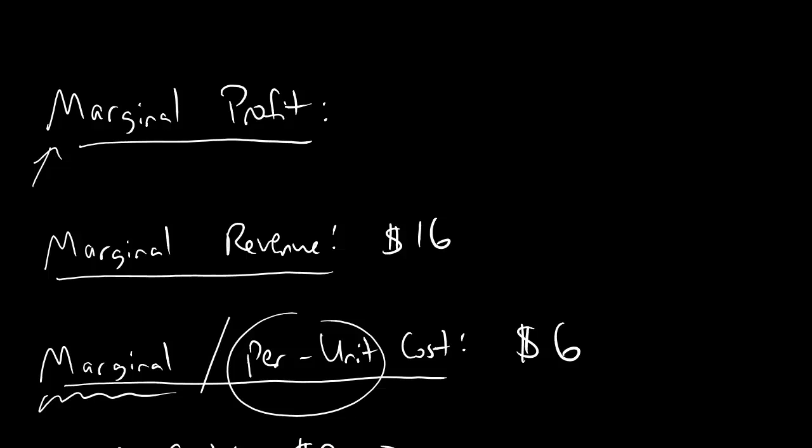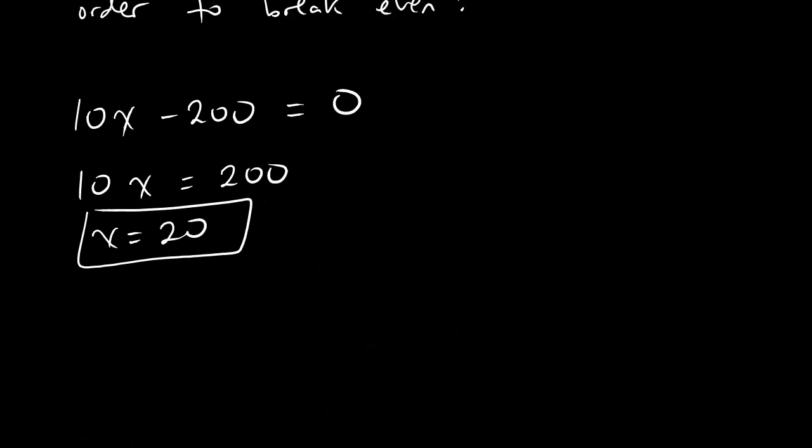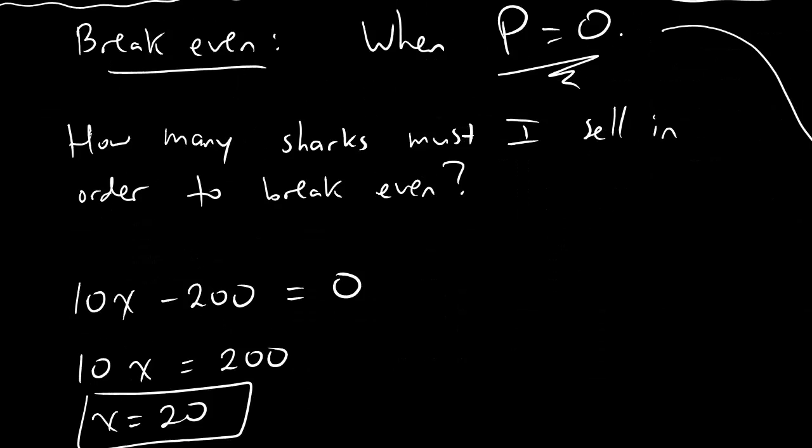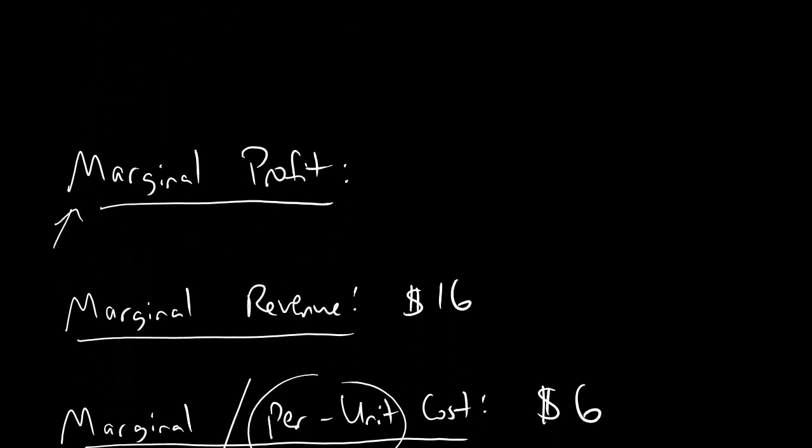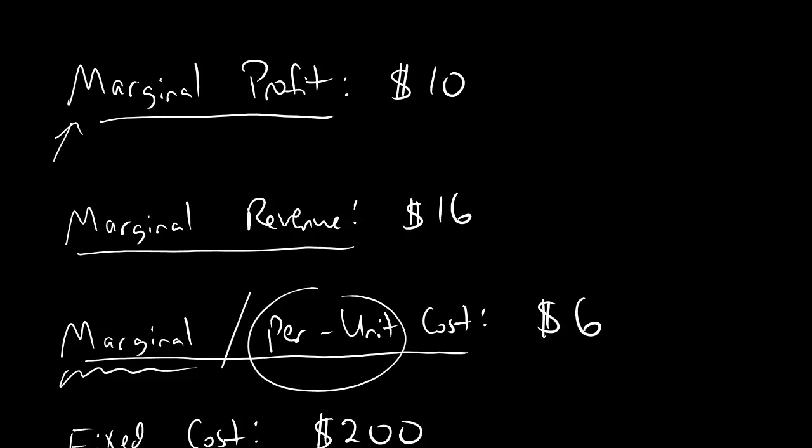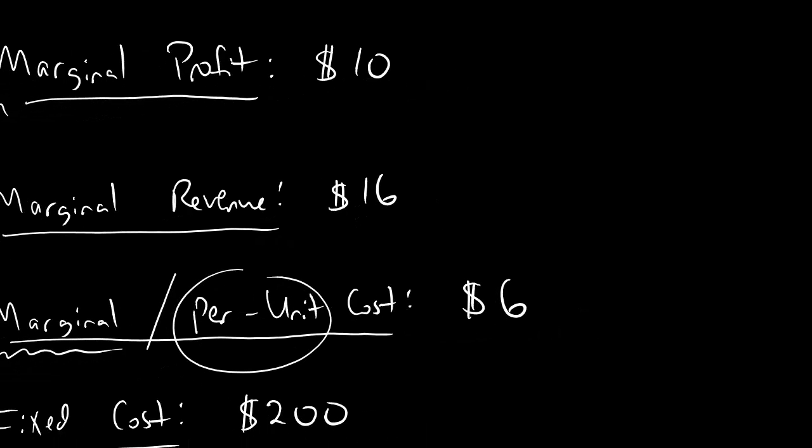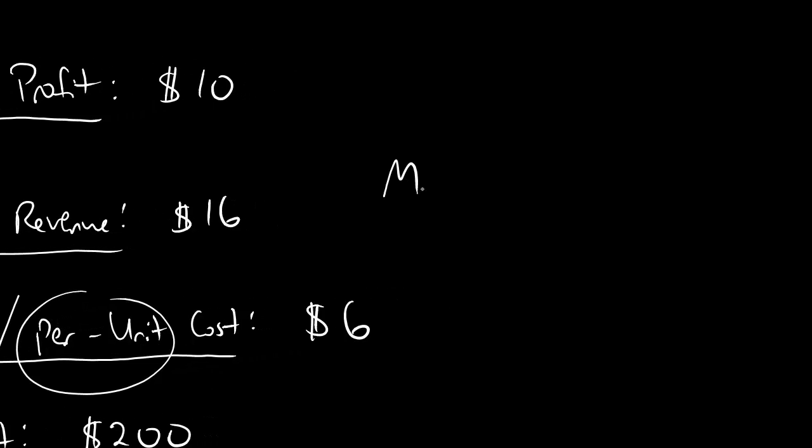And last but not least, we're looking at marginal profit. So we scroll up to the profit function. Profit function is here, 10x minus 200. And marginal just means slope. So the marginal profit is going to be $10. And something you can see right away is that marginal profit equals marginal revenue minus marginal cost. Marginal profit equals marginal revenue minus marginal cost. That will always be true. Always, always, always.